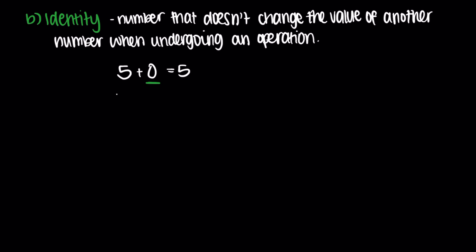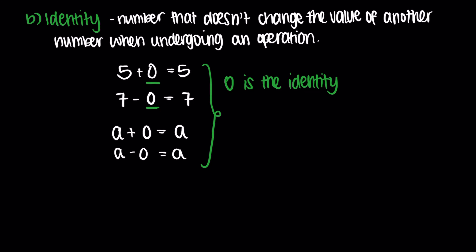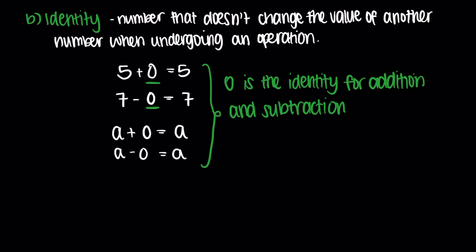Similarly, if we have the number 7, then 7 minus 0 is 7, which means that 0 is the identity for subtraction, since it doesn't change the value of the number when we subtract 0 from it. So the general rule is: if we have a number A which might represent any number, then A plus 0 is equal to A always, and A minus 0 is also A. So 0 is what we'd refer to as the identity for addition and subtraction.